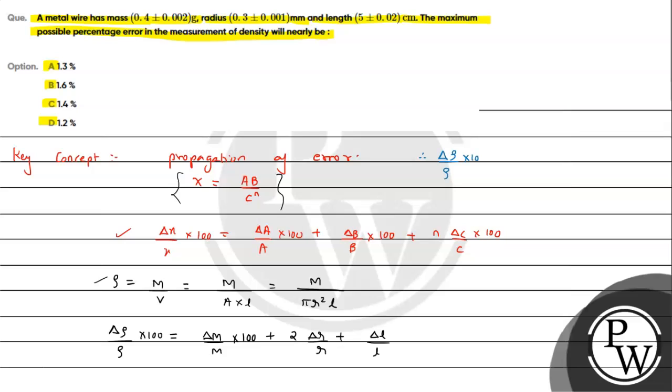Therefore, delta rho by rho times 100 will equal delta m upon m, which is 0.002 divided by 0.4, plus 2 times delta r upon r, which is 2 times 0.001 divided by 0.3, plus delta l upon l, which is 0.02 divided by 5. We have kept the values given as it is because when we divide with the same prefix, the answer will be the same.